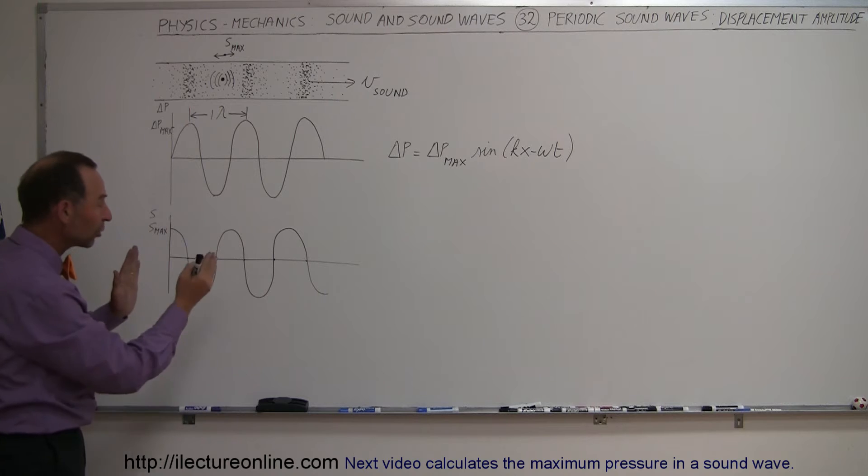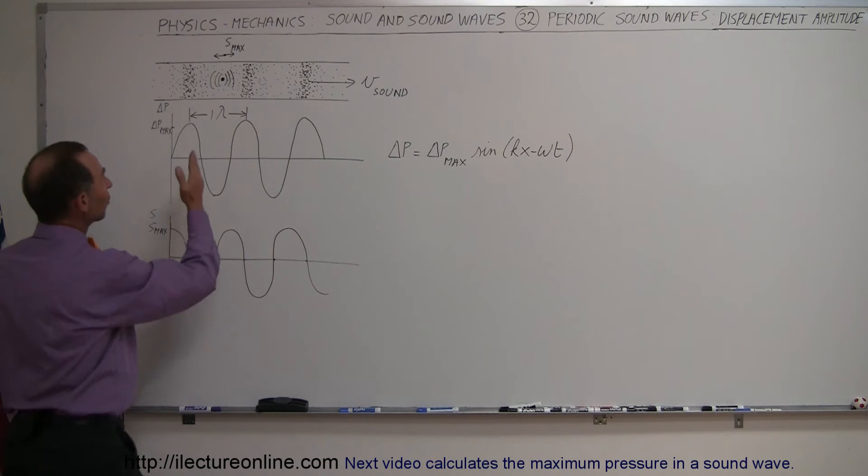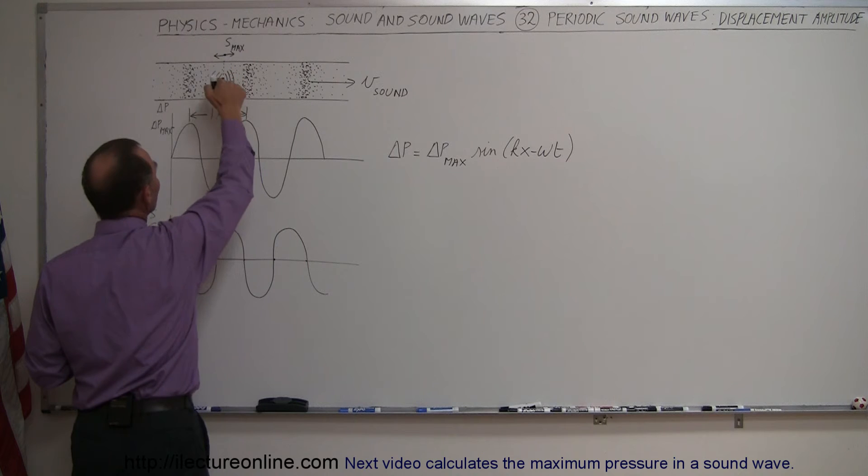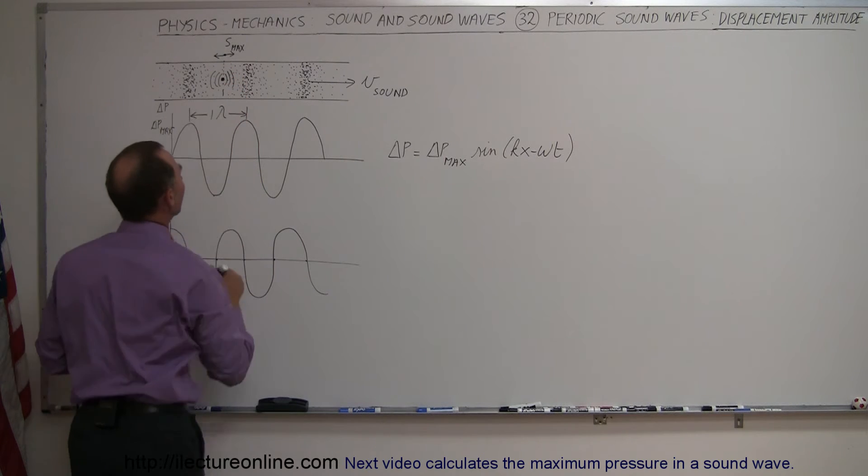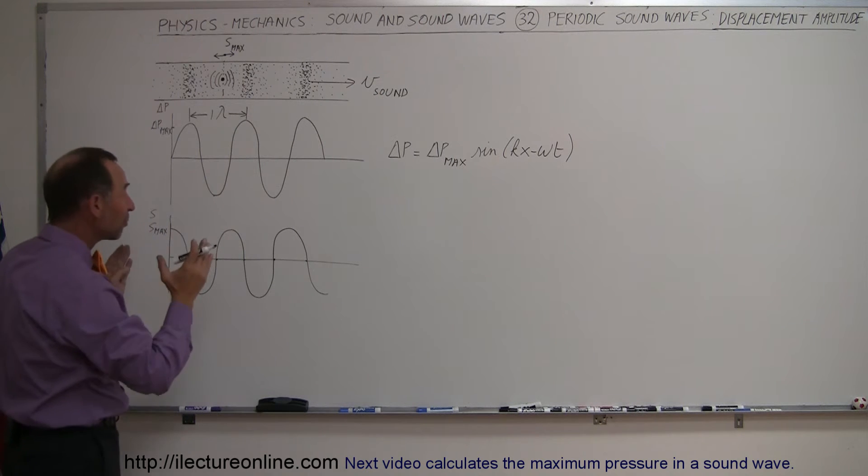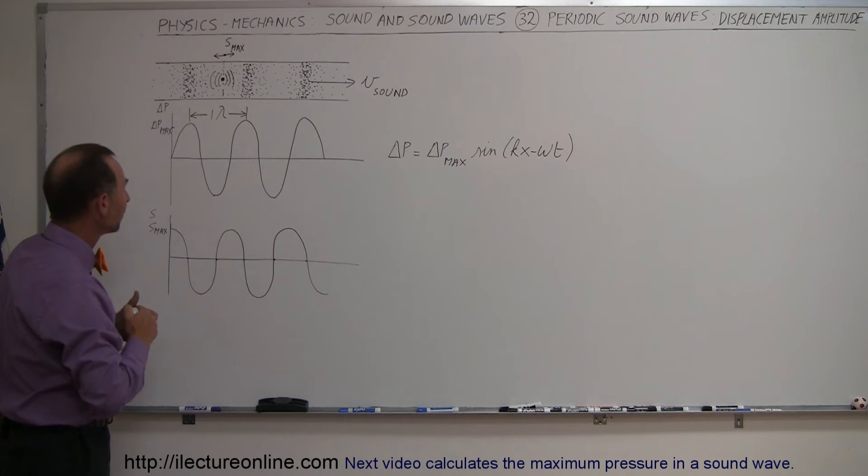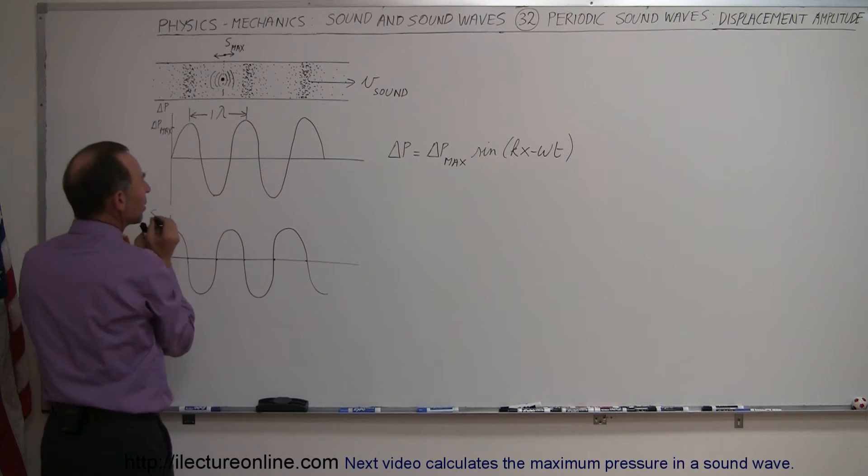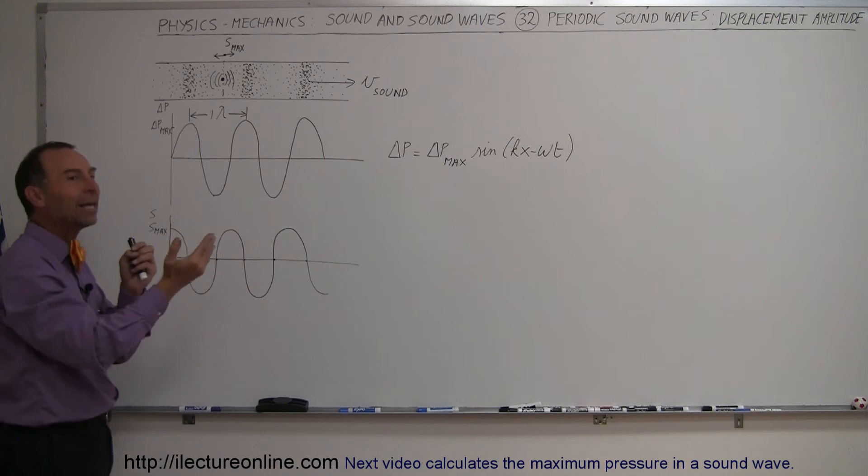So in other words, as the molecules are moving back and forth, they're displacing from their normal positions. So let's say this molecule, let's take this one for example, it's going to be vibrating back and forth at the same frequency as the pressure waves were developed, or were produced, I should say. And so as they're moving back and forth, it causes regions of high and low pressure.